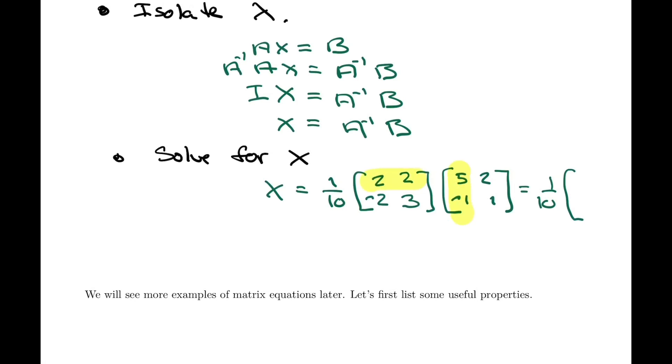2 times 5 is 10 minus 2 is 8. First row second column: 4 plus 2 is 6. Then we do the same thing with the second row. First column: minus 2 times 5 is negative 10 minus 3 is negative 13. And finally negative 4 plus 3 is minus 1.